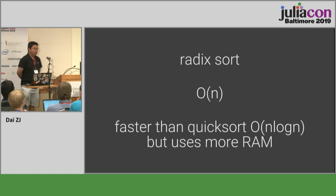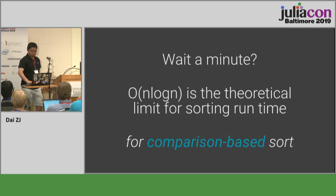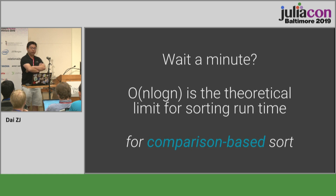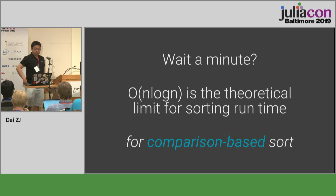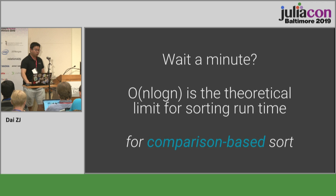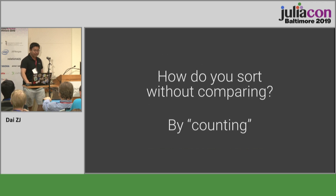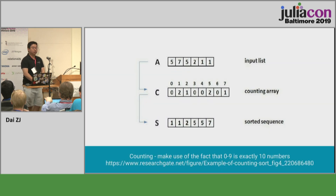I think the secret to data.table's speed is really this sorting algorithm called radix sort, which can sort arrays in O(N). A lot of people — and in my computer science courses — never learned about radix sort. I always learned about quicksort and things like that, which have O(N log N) performance. We tend to think that N log N is the theoretical limit for sorting runtime, but that's actually not true — it's only true for comparison-based sorts, where you compare two elements and swap them. So how can you sort an array without comparisons?